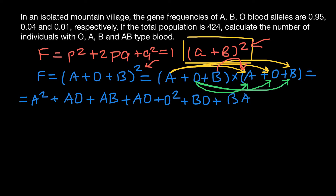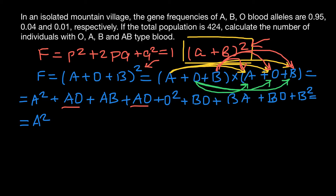Then for the last term: B times O gives BO, and B times B gives B². Now rearranging, we have A² + 2AO — since AO appears twice — plus 2AB.